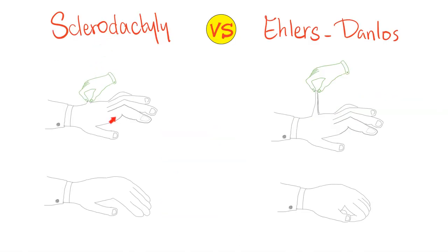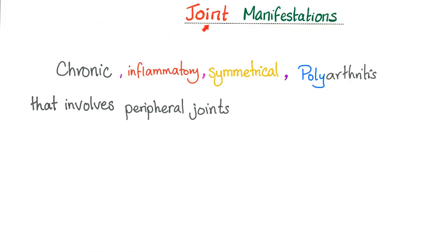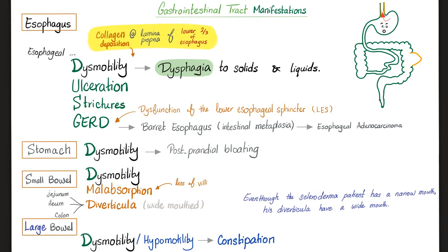If you try to pull the skin of a patient with scleroderma, it is very tight and very thick. Ask the patient to make a fist — in scleroderma, they cannot. Joint manifestations: chronic inflammatory, symmetrical polyarthritis involving peripheral joints. The GI tract shows esophageal dysmotility due to collagen deposition, specifically in the lamina propria of the lower two-thirds of the esophagus, near the lower esophageal sphincter.